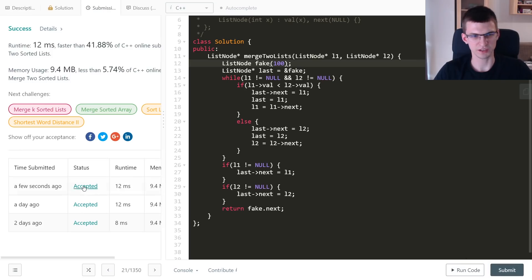We just compare two new values and fake.next is that first element of the real thing. I should have first run code, but I submitted and it's okay.